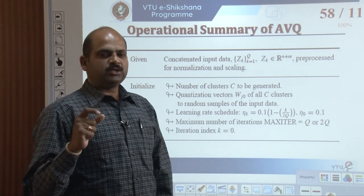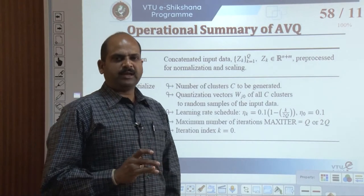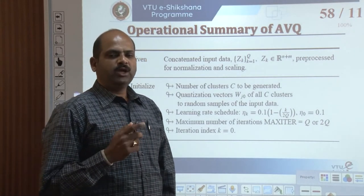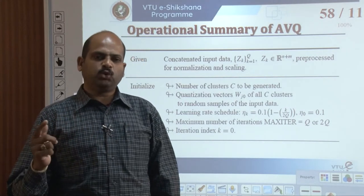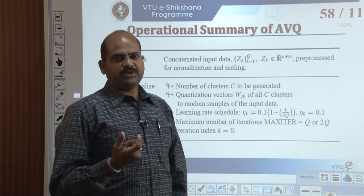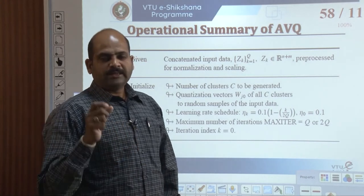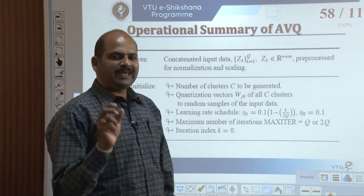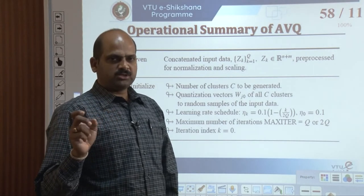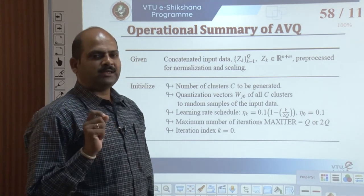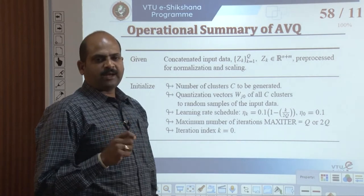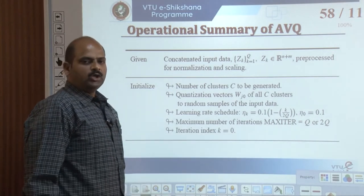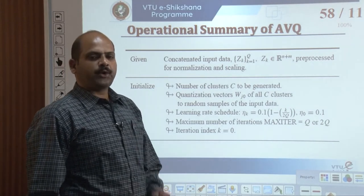The data points generated are randomly and normally distributed, with 100 data points each about centers with coordinates (0, 0, 0) and (1, 2, 3), with a standard deviation of 0.8. The data scatter can be seen clearly and two clusters are nearly visible. The AVQ algorithm extracts the centroid of this data cluster. The operation summary involves concatenating input data as z(k) = [x; y], proposed for normalization and scaling.